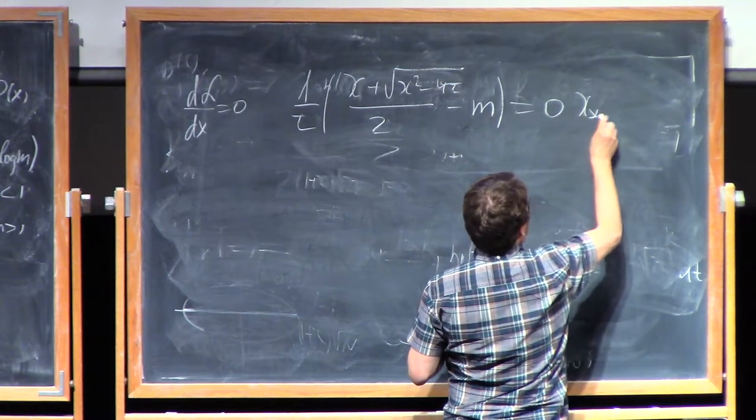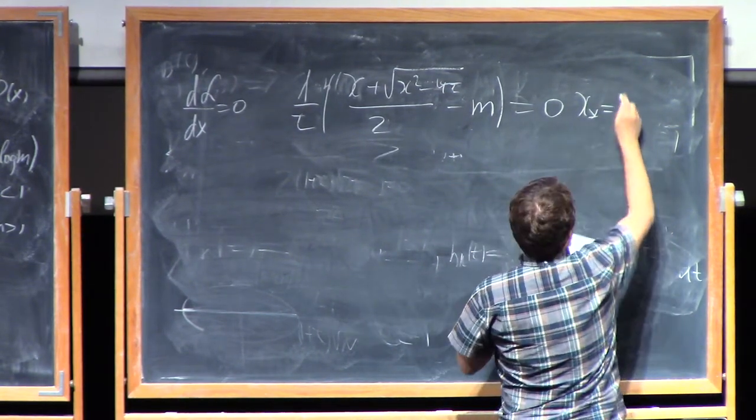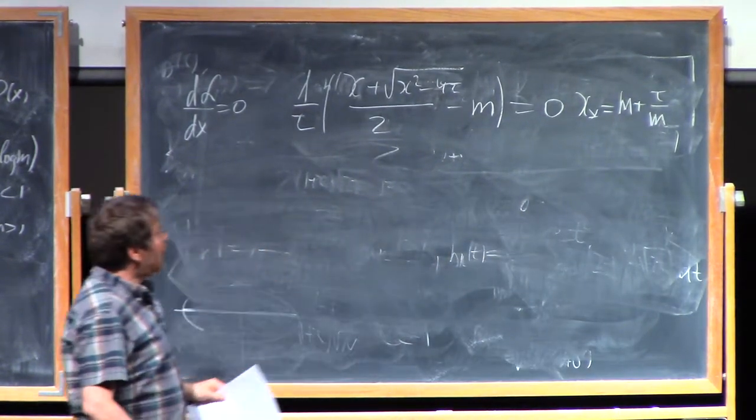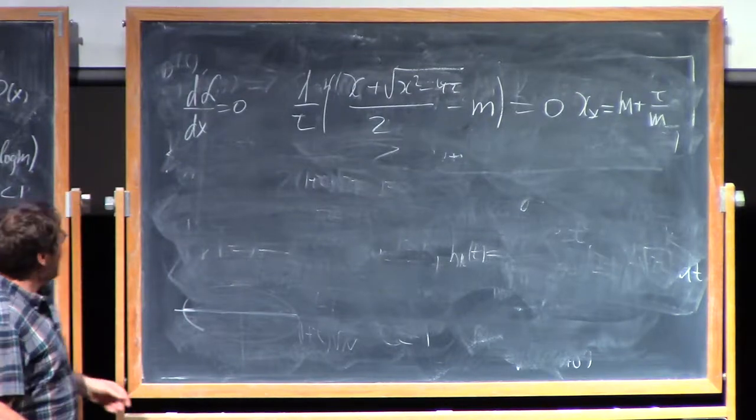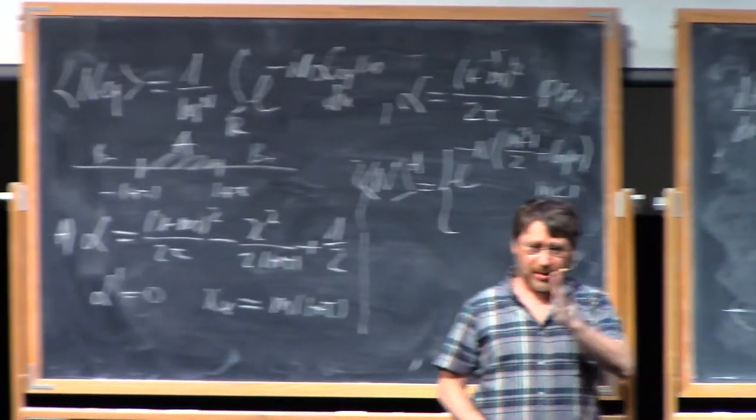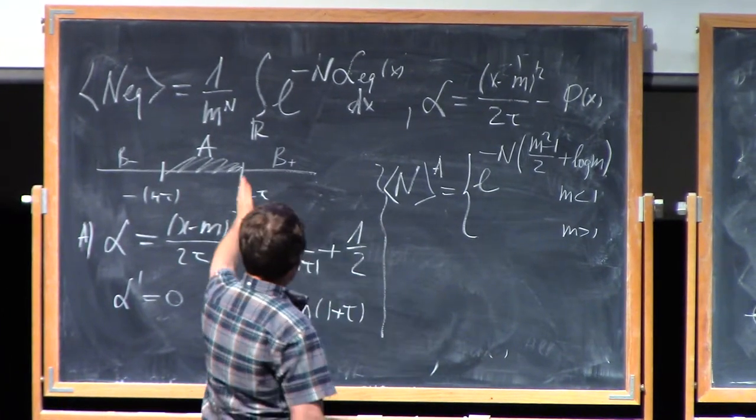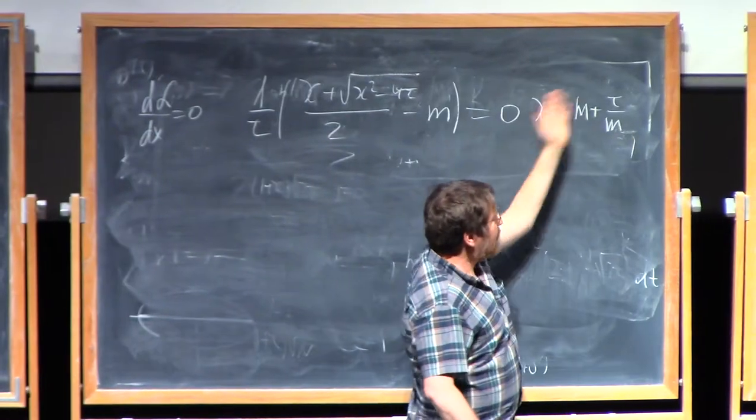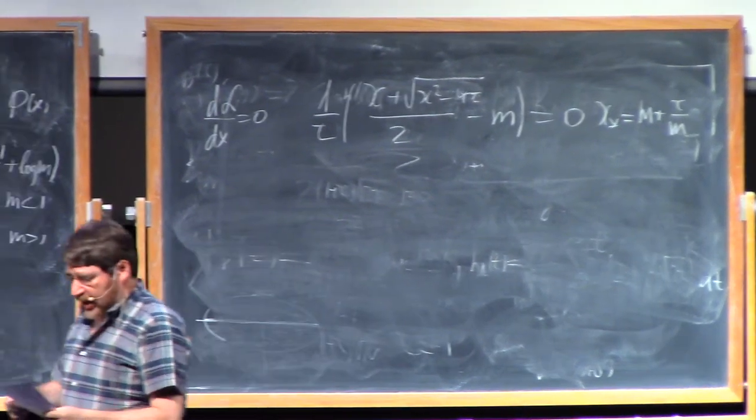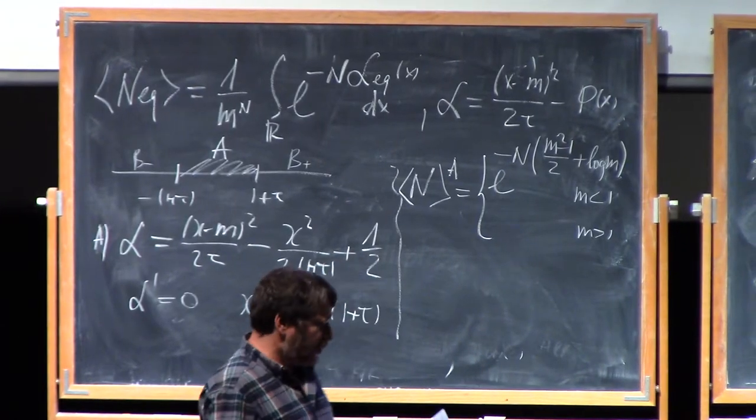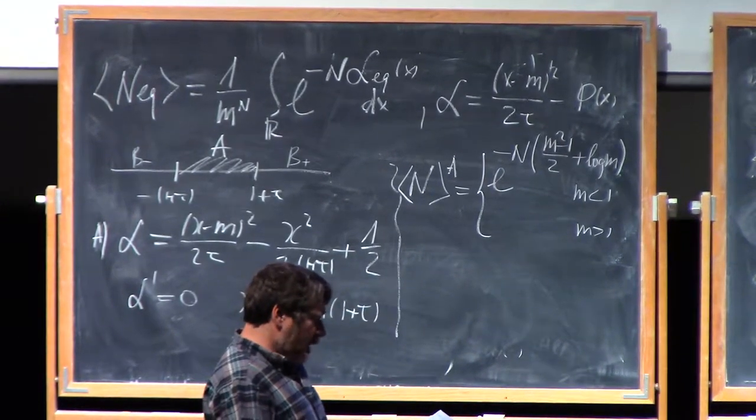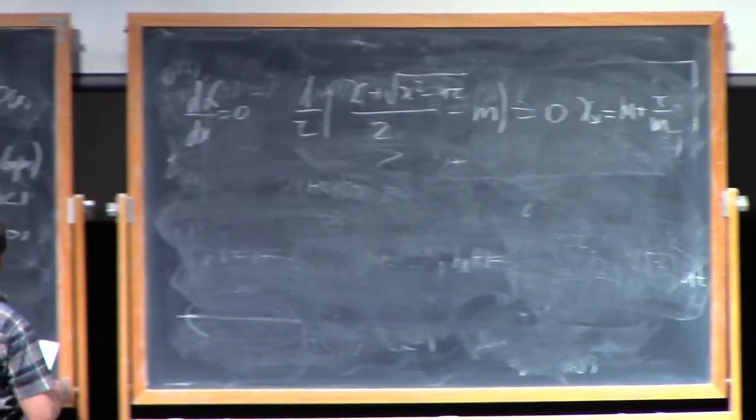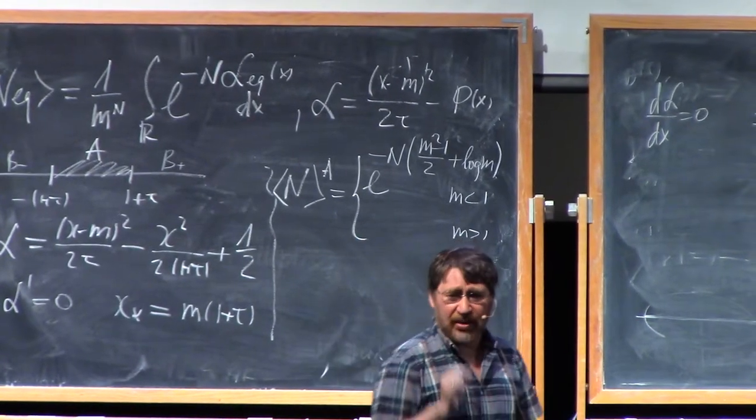So x plus square root of x squared minus 4 tau divided by 2 minus m equal to zero. One should find just x in terms of m, solving this relation. x is equal to m plus tau divided by m. This is the point where, which is the stationary point in the interval from 1 plus tau to infinity. In fact, for m larger than 1, this integral is dominated by saddle point, otherwise it's dominated by the boundary.